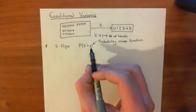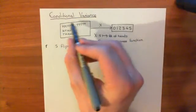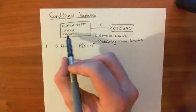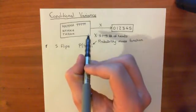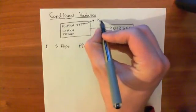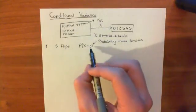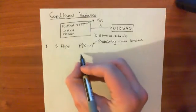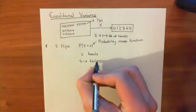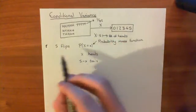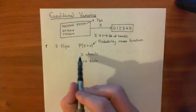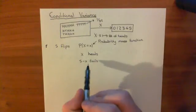Basically, all we need to know is how many of these outcomes actually have little x heads in them. Each one of these specific outcomes is equally likely — there are 32 possible outcomes, so the probability of each one is 1 over 32. So all we need to know is how many of the outcomes in here actually get little x heads. If you've got little x heads, then it's necessary that you've got 5 minus little x tails — so if you've got 4 heads, the number of tails would have been 1, etc.